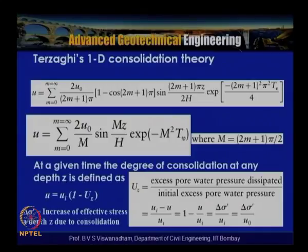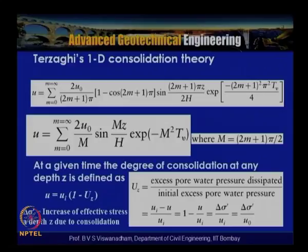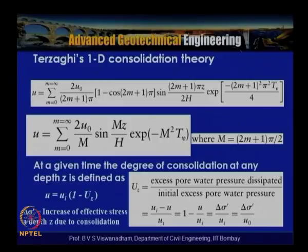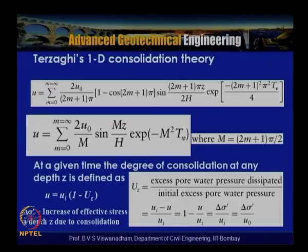Substituting n = 2m + 1, the expression becomes: u = Σ(m=0 to ∞) (2u₀/M) · sin(Mz/h) · exp(−M²Tv), where M = (2m+1)π/2. This is the standard form of the Terzaghi consolidation solution for uniform initial excess pore water pressure.